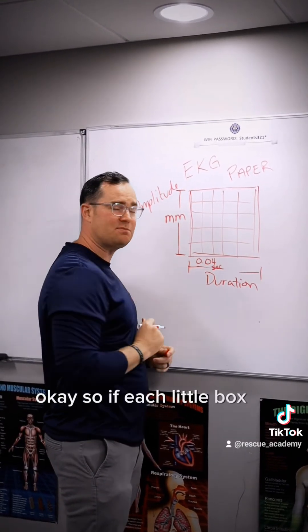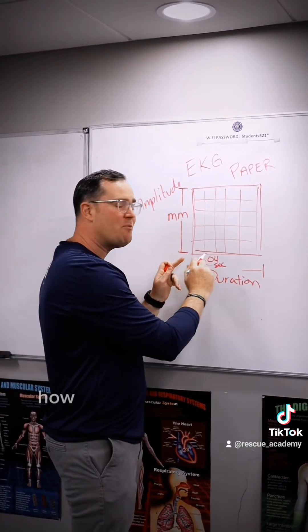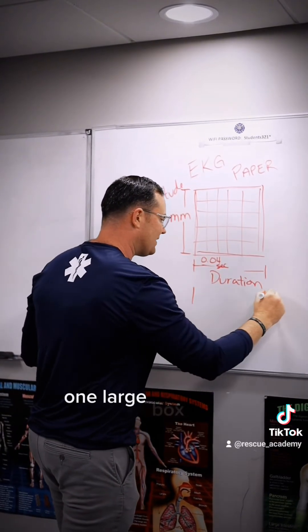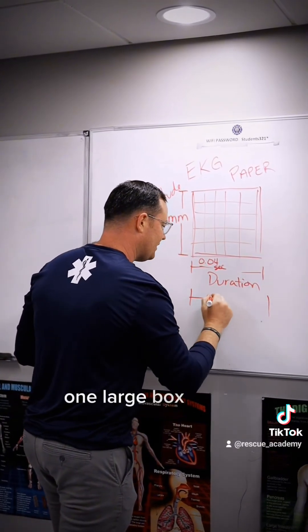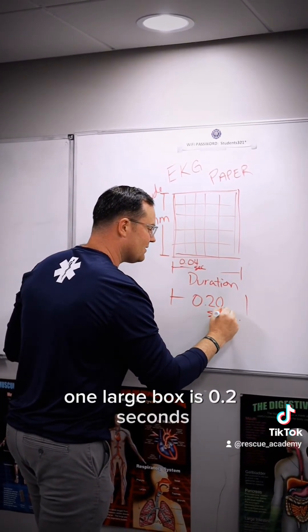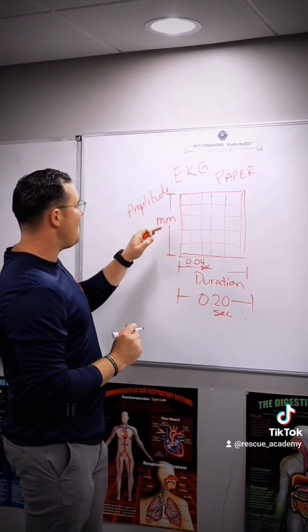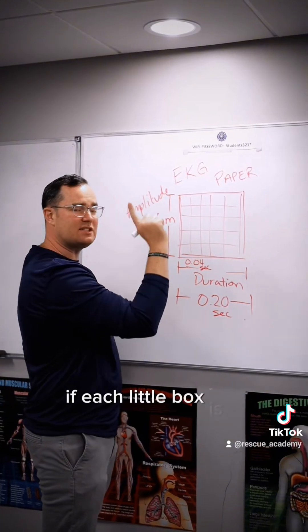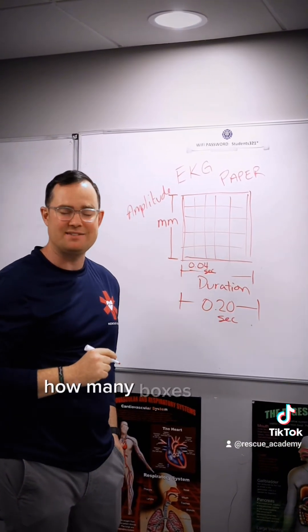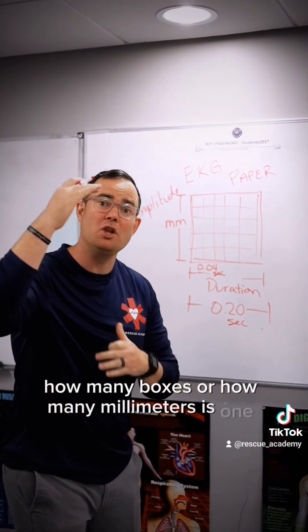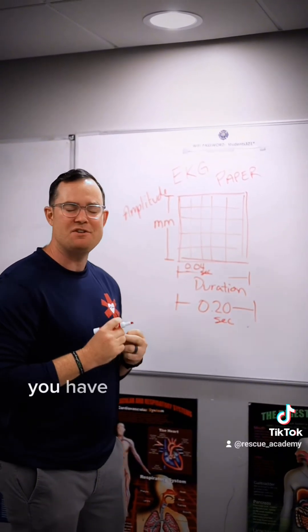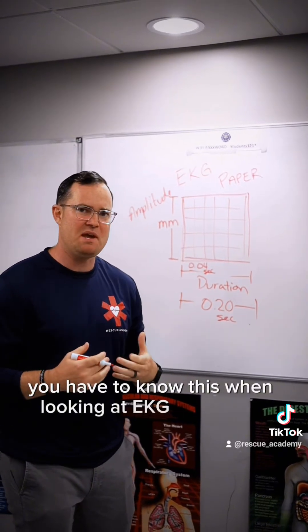So if each little box is 0.04 seconds, how many seconds is one large box? And if each little box is one millimeter high, how many millimeters is one large box? Five millimeters. You have to know this when looking at EKG papers.